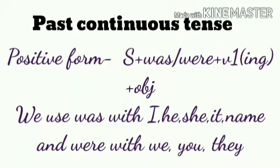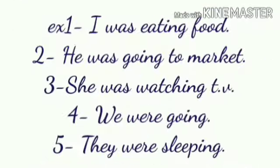Let's see the formula of past continuous tense in positive form. Subject plus was/were plus V1 with -ing plus object. We use 'was' with I, he, she, it, and names; and 'were' with we, you, they. Examples: I was eating food. He was going to market. She was watching TV. We were going. They were sleeping.